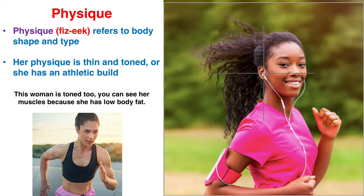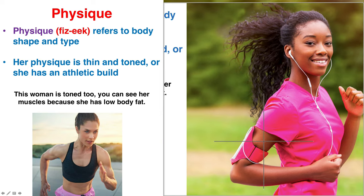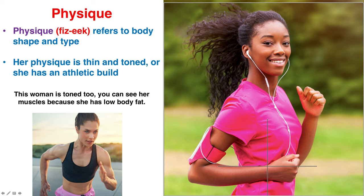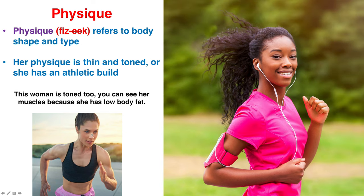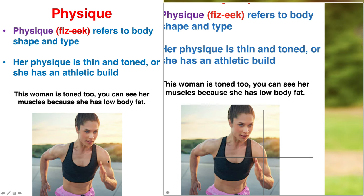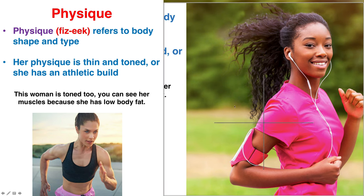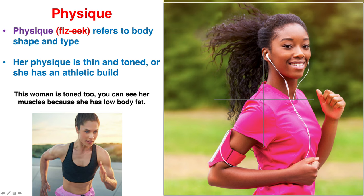Now let's talk about her physique. Physique refers to body shape and type. Her physique is thin and toned, or you could say she has an athletic build. She's not wide at the shoulders, her arms aren't very wide, and her waist isn't very wide either — so she's thin. Toned refers to the muscles that you can see. Looking at her, while not being as toned as a very muscular woman, she is in pretty good shape and looks like she also eats well.